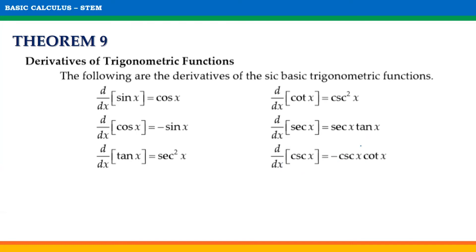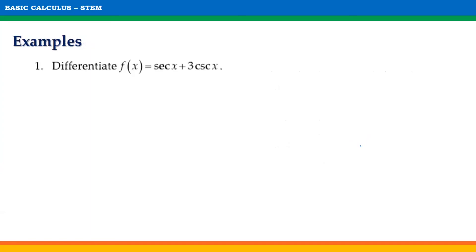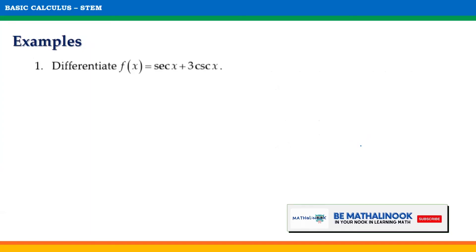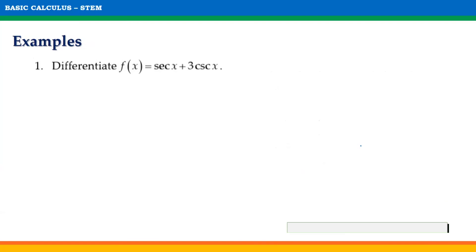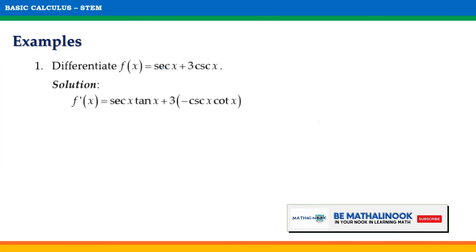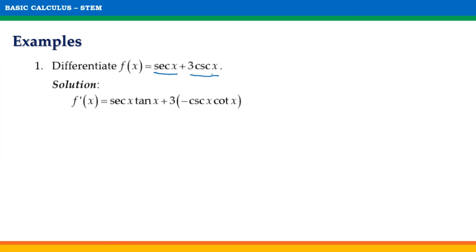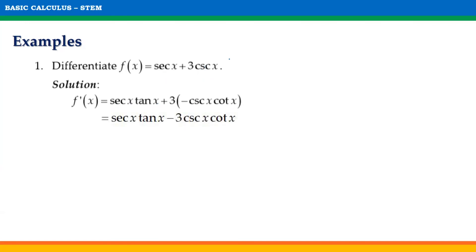Let us now apply these rules on the following examples. Differentiate f of x equals sec x plus 3 csc x. We will be differentiating each term: sec x and 3 csc x. The derivative of sec x is sec x tan x, and the derivative of csc x is negative csc x cot x. Thus, the derivative of f of x is equal to sec x tan x minus 3 csc x cot x.